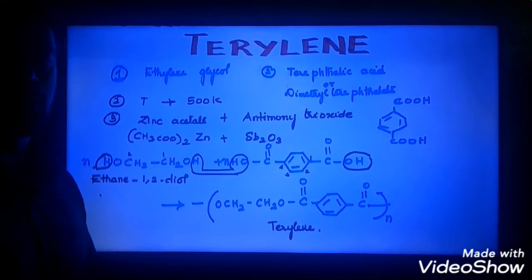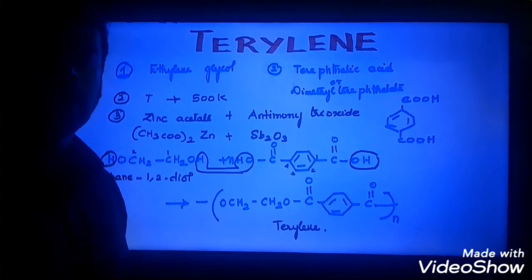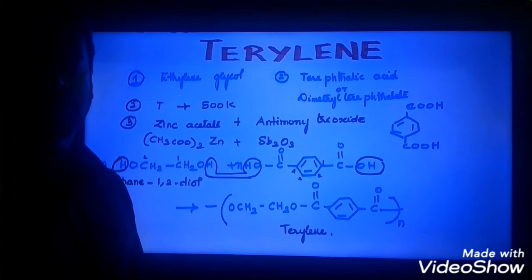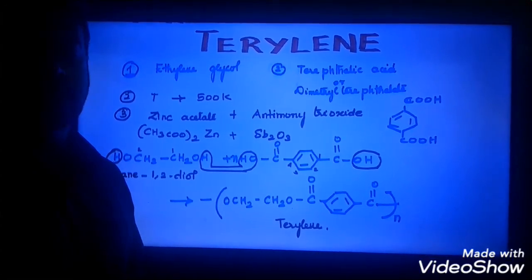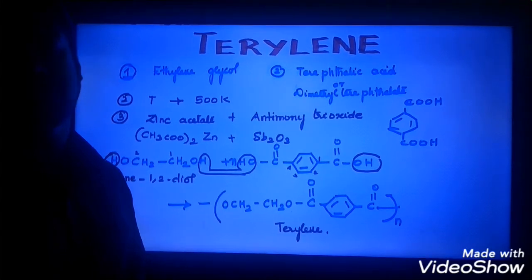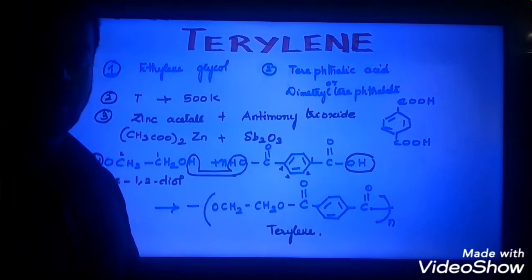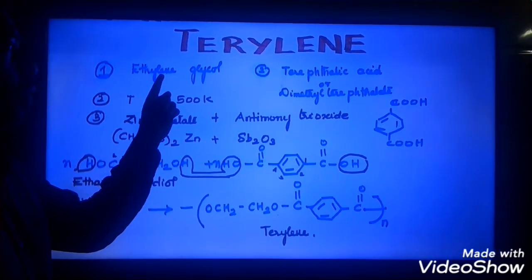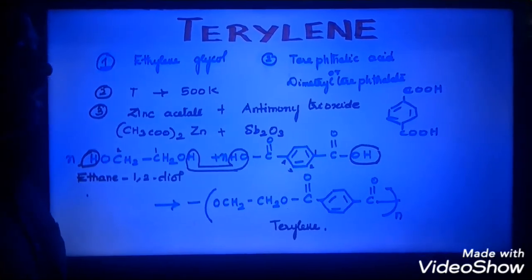What do you mean by a condensation polymer? It is a polymer which is prepared by two or more monomers, and at the end of the reaction a water molecule is released. Then the reaction is said to be condensation polymerization. This is a product of condensation polymerization where one of the monomers is ethylene glycol and the other is terephthalic acid.